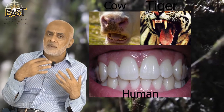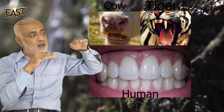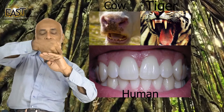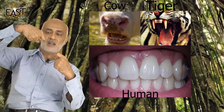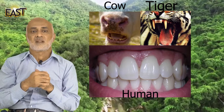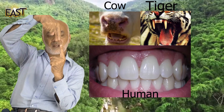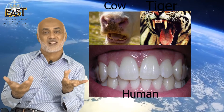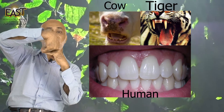Then there is a third type — omnivores. Omni means all or everything. Omnivores are us, humans — we eat both vegetables and meat. Now, herbivores have flat teeth on top so that they can grind plants. Carnivores have pointed sharp teeth so they can tear into meat. And humans, being omnivores, have both types of teeth — pointed ones and flat grinding ones — because we eat both.